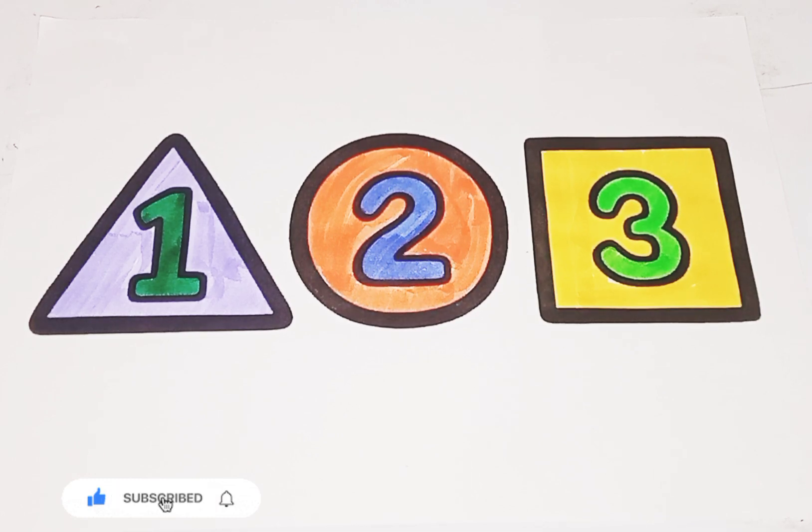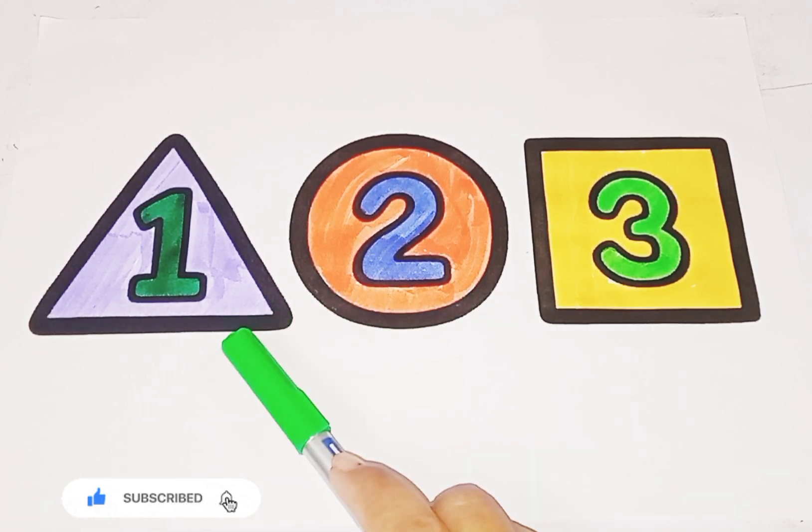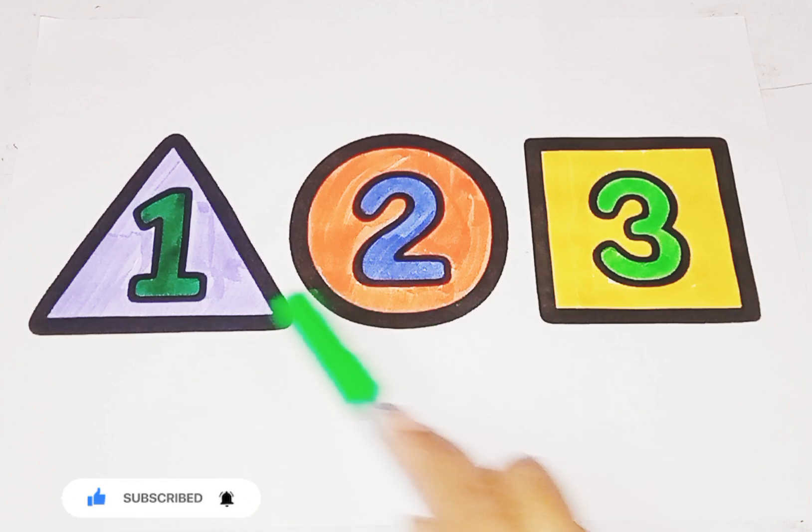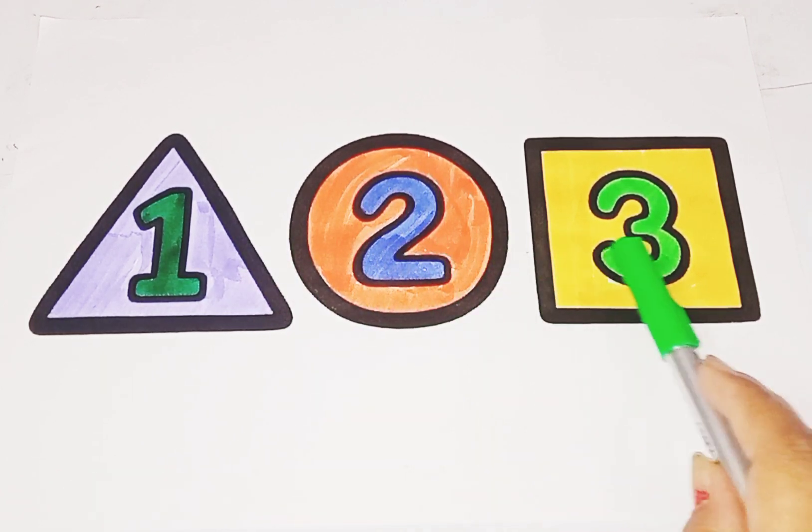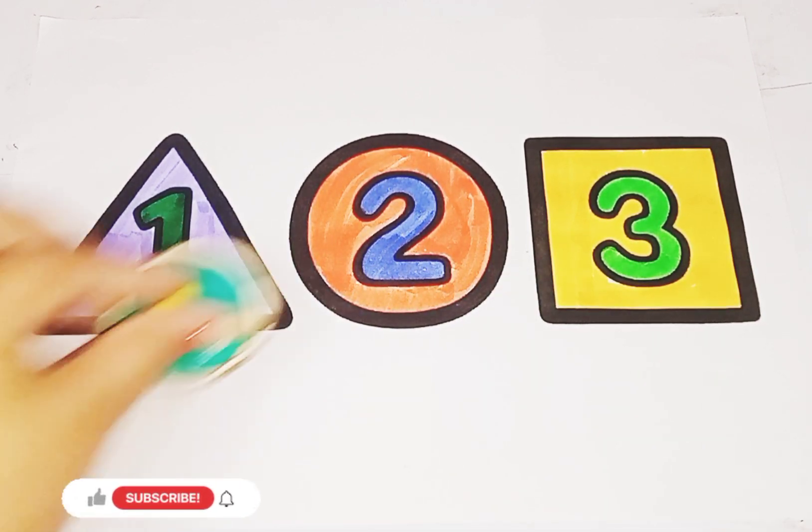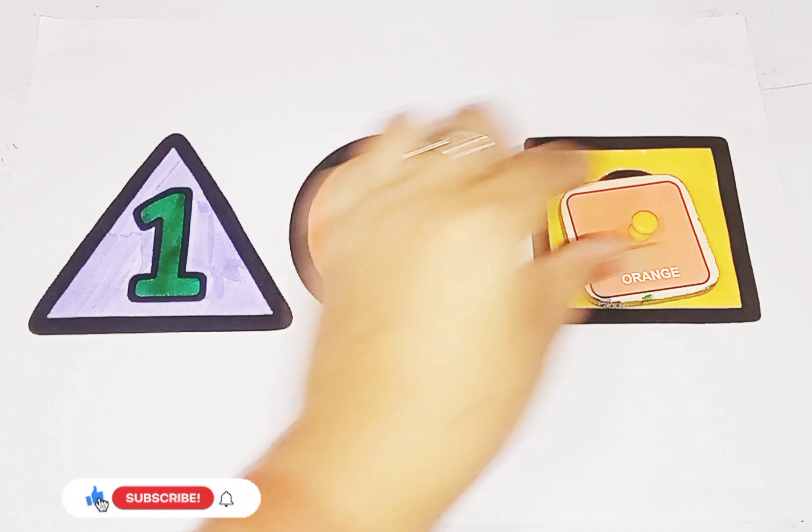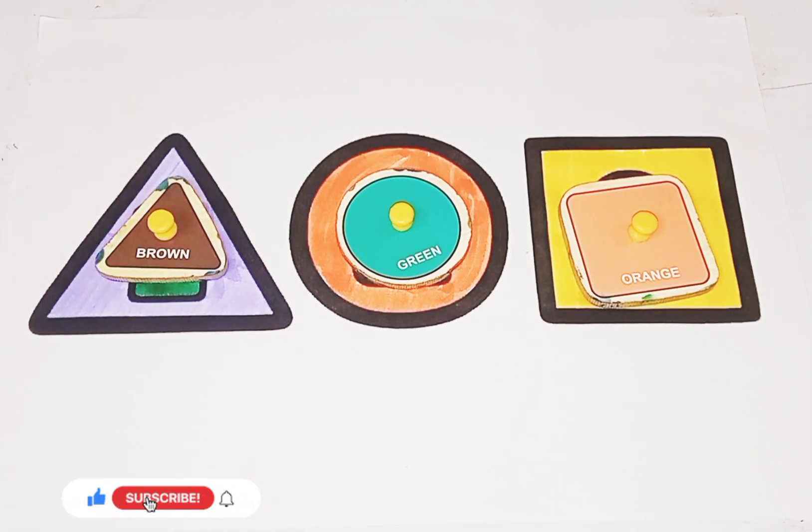So kids, today we learn shapes and number: triangle, circle, square, number one, number two, number three. This is circle, square, triangle. Bye bye, please like and subscribe, bye bye.